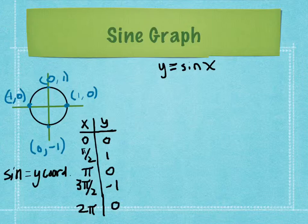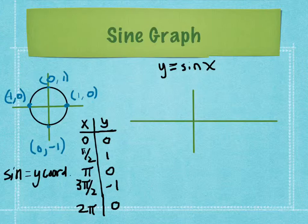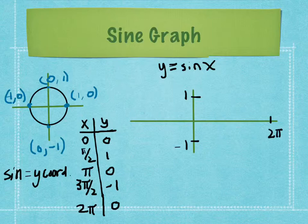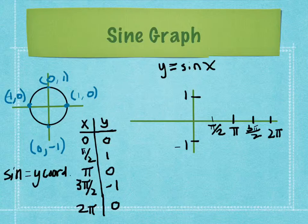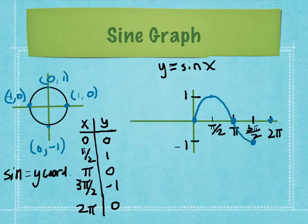We take our axes and plot these points. We need to go up and down to 1 and -1, and out to 2π. Half of 2π is π, halfway between that is π/2, and halfway between π and 2π is 3π/2. Plotting the ordered pairs: (0,0) at the origin, (π/2, 1) going up to 1, (π, 0) back to the x-axis, (3π/2, -1) down to -1, and back to the x-axis at 2π. Connecting these gives us the sine graph.